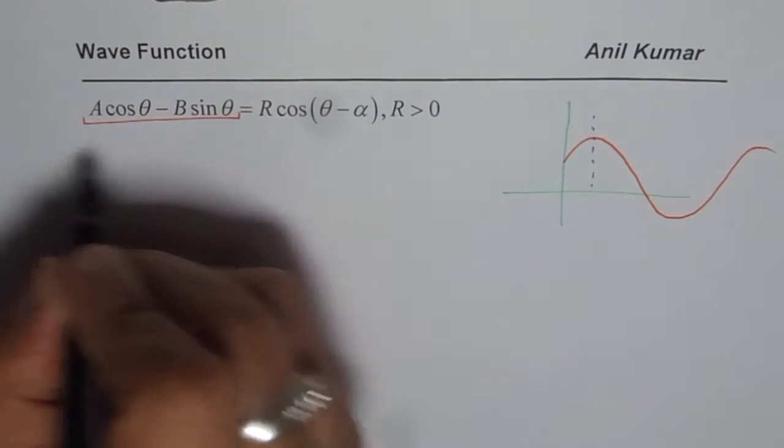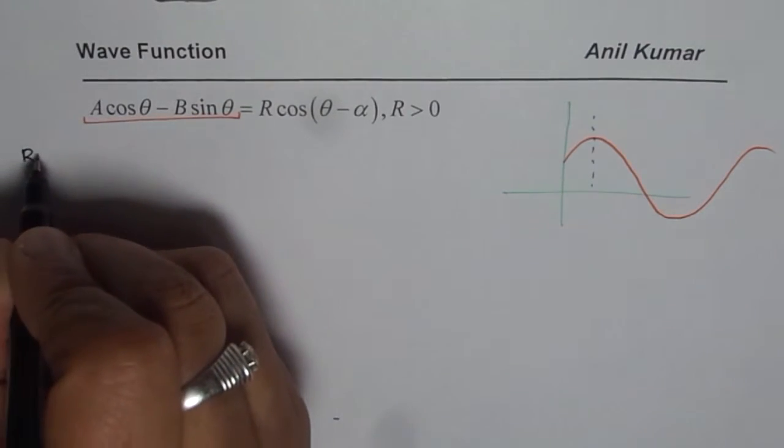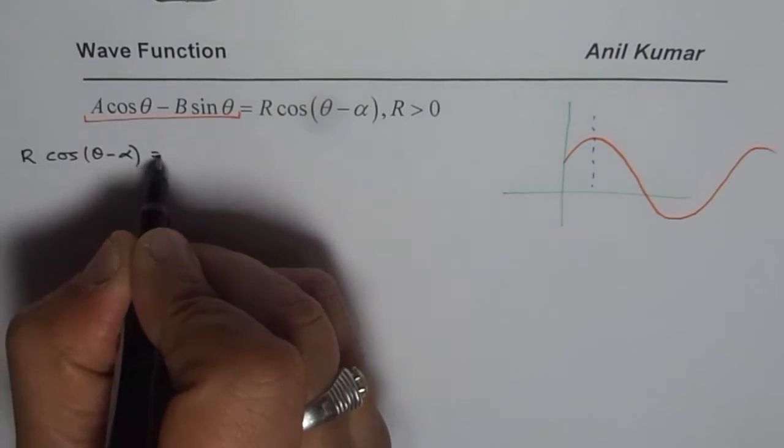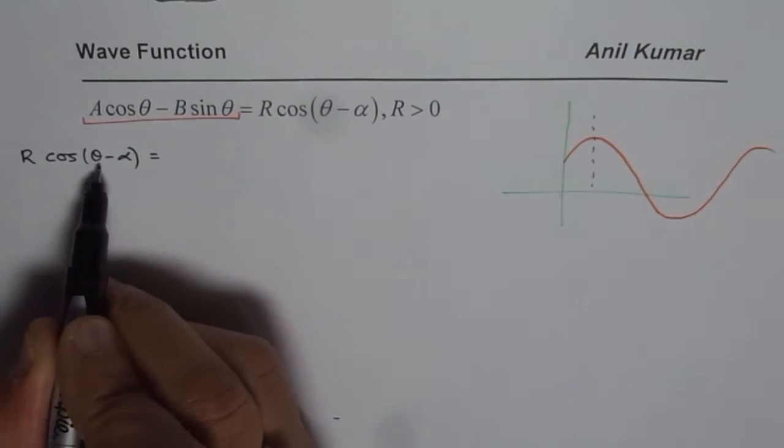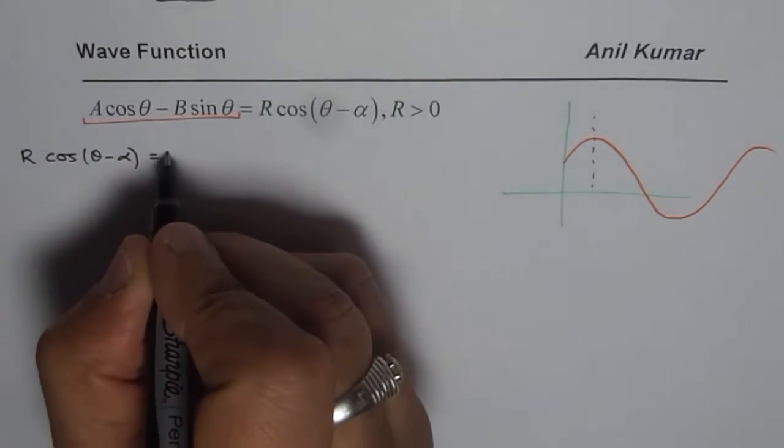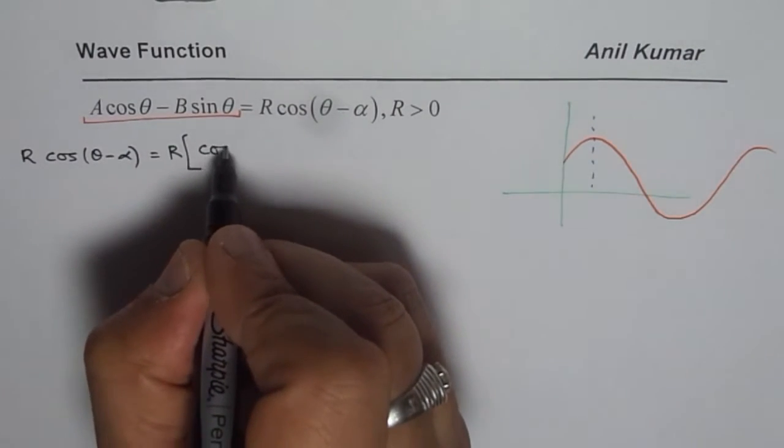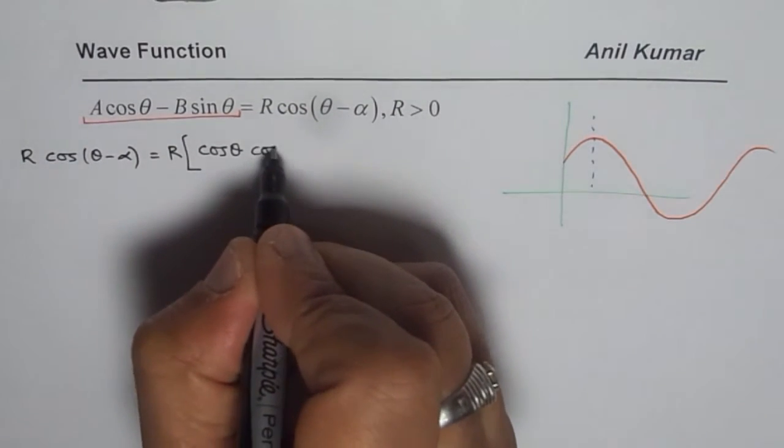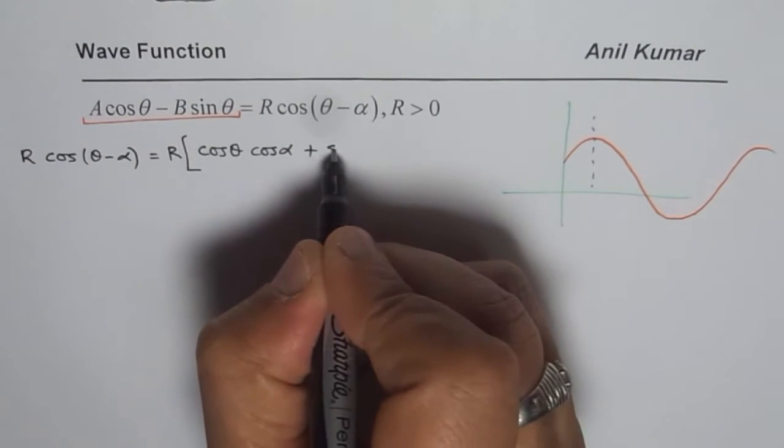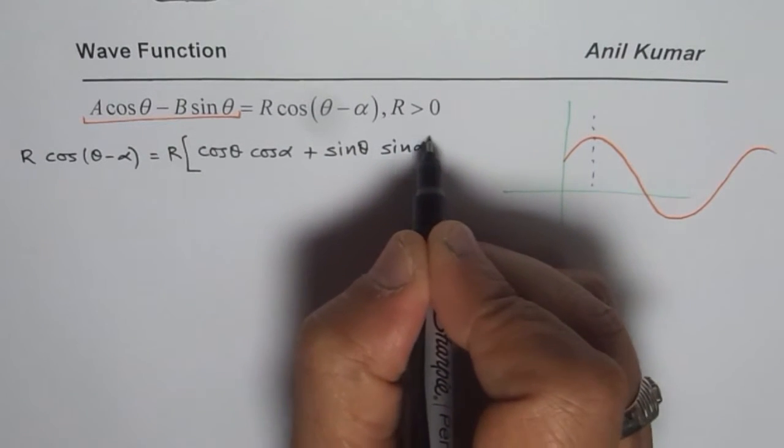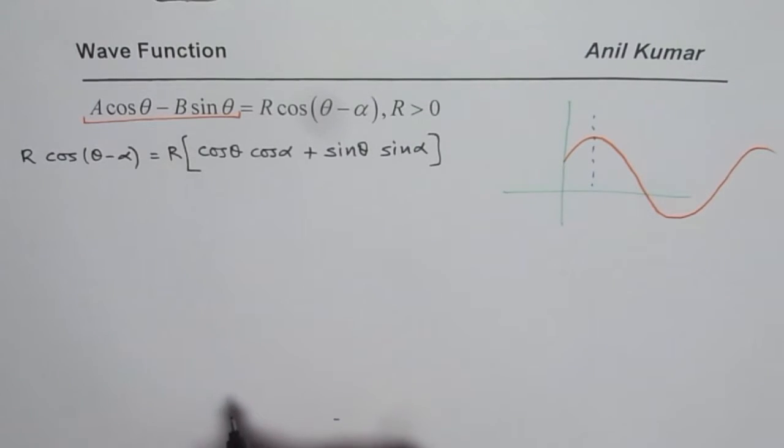Let us expand the right hand side which is R cos(θ - α). We will use the compound angle formula to expand it. So we get R times cos θ cos α plus sin θ sin α. That is the compound angle formula which has been applied directly.